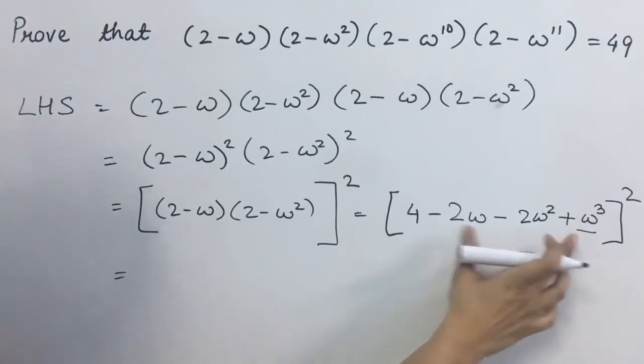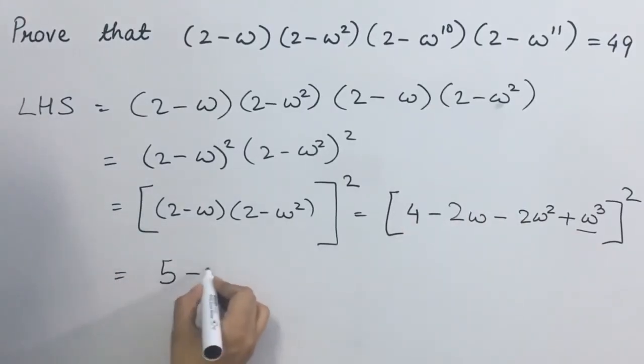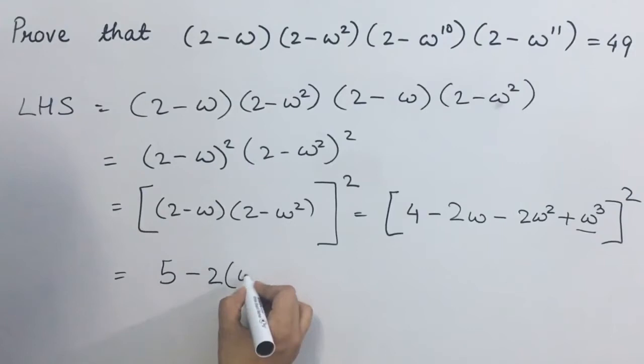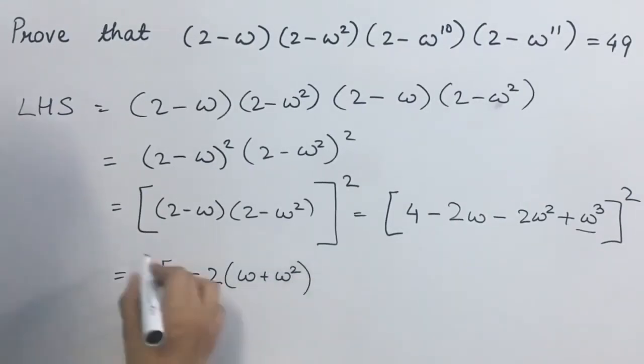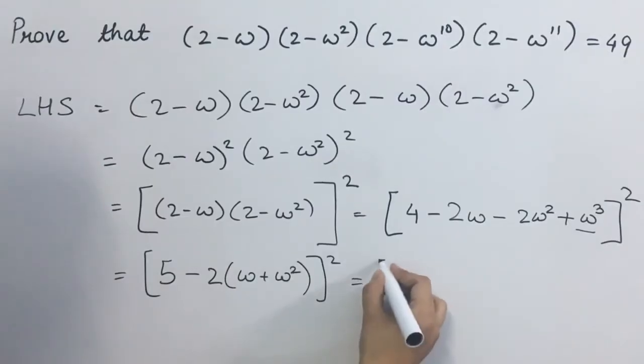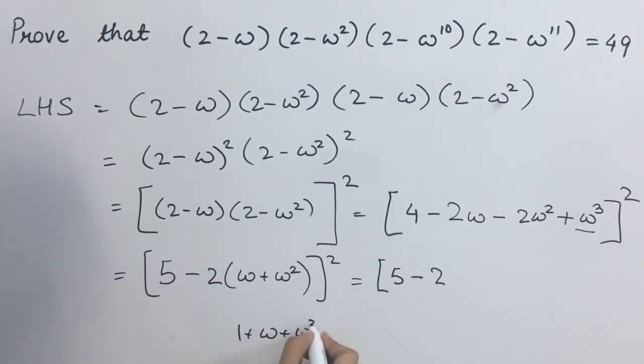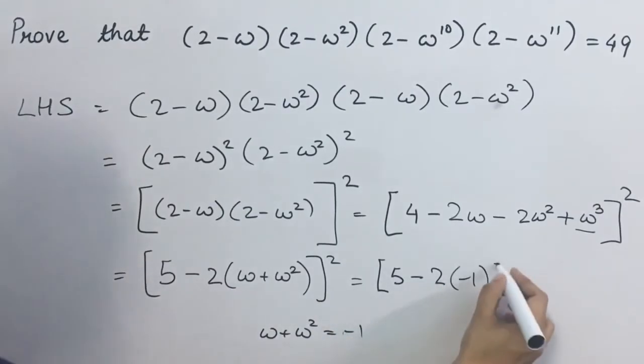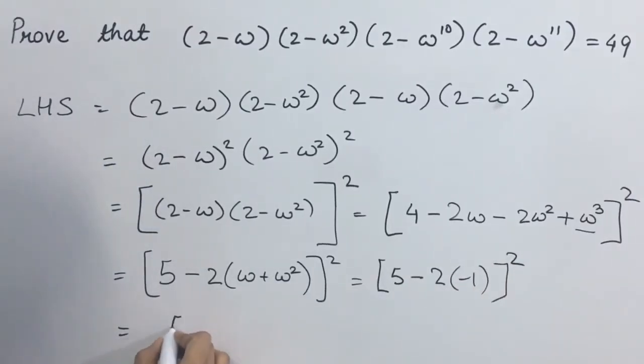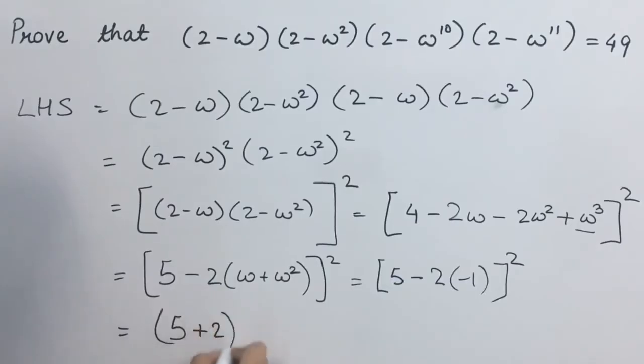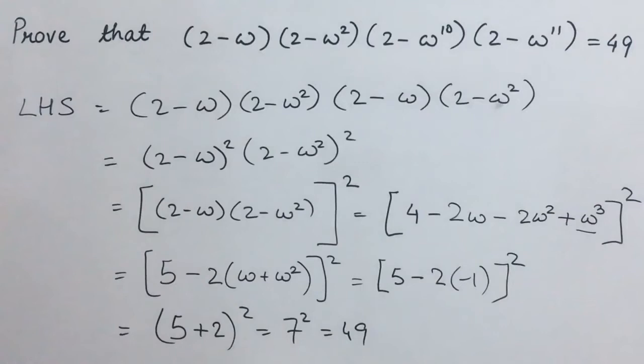Omega cube is 1. So 4 plus 1, 5 minus 2. Common liya toh, omega plus omega square. This raised to power 2 equals 5 minus 2. This value is minus 1 because 1 plus omega plus omega square equals to 0. This gives this value equals to minus 1. So here, minus 1, 5 plus 2, 7 square, 49. This is the RHS.